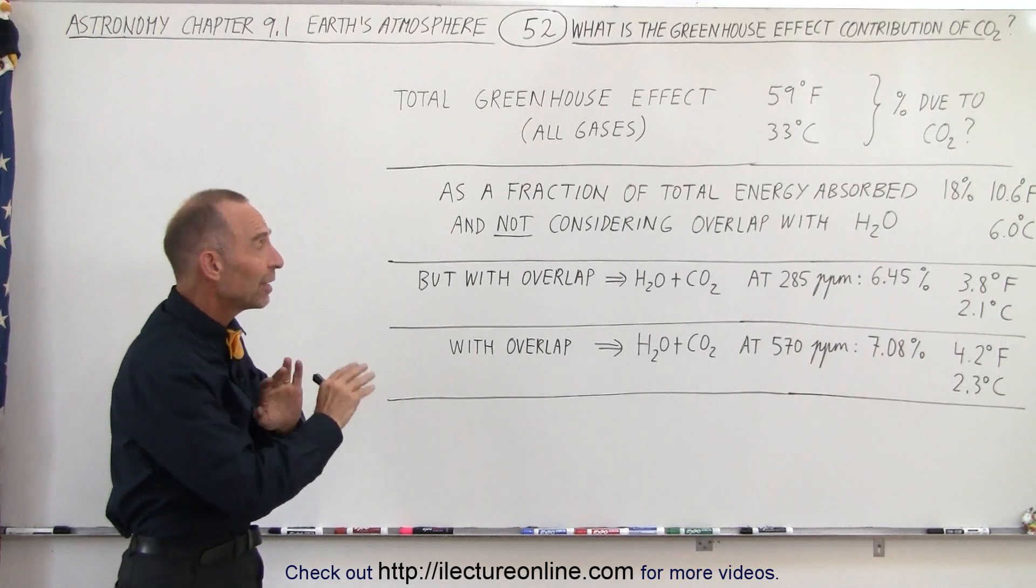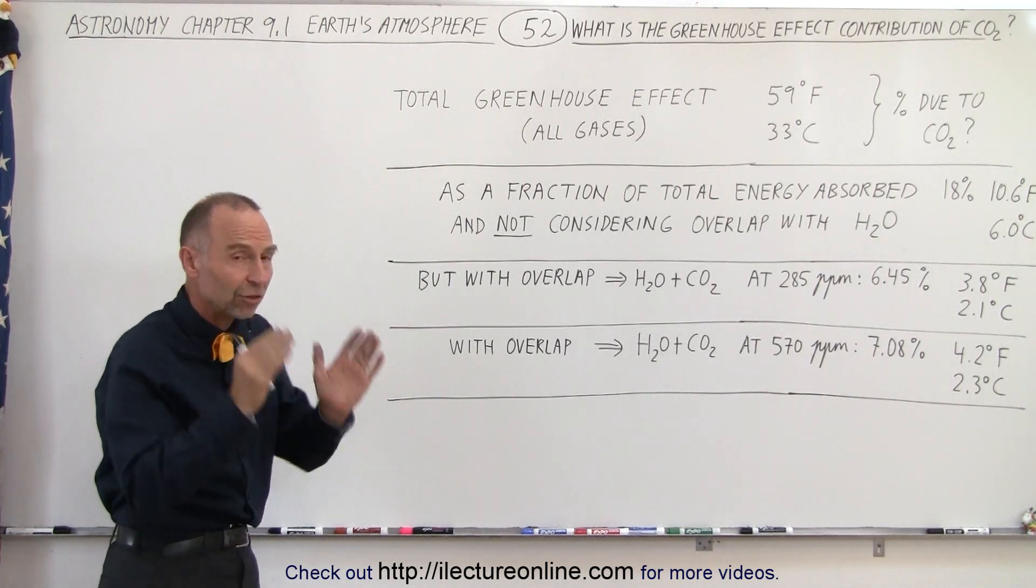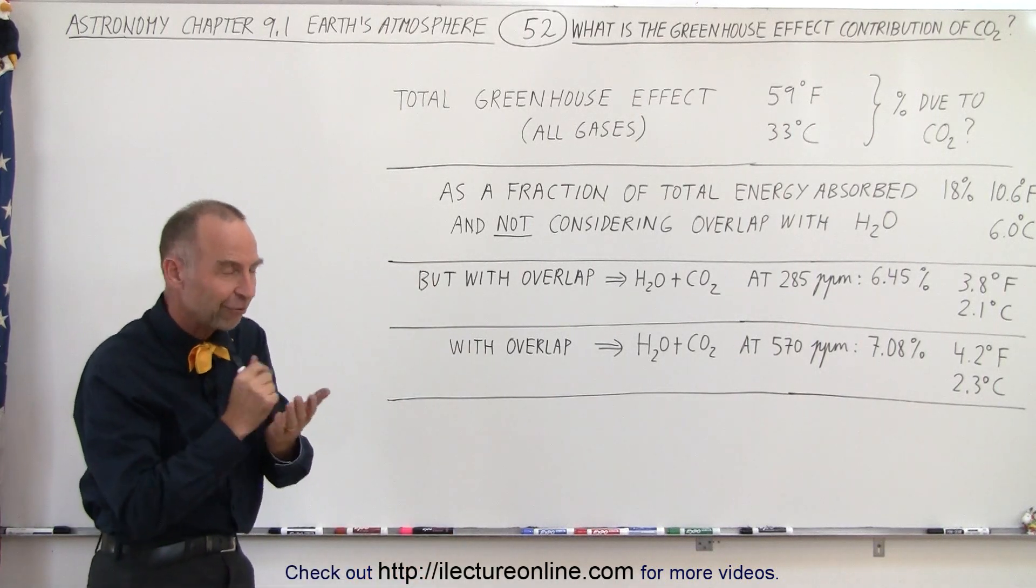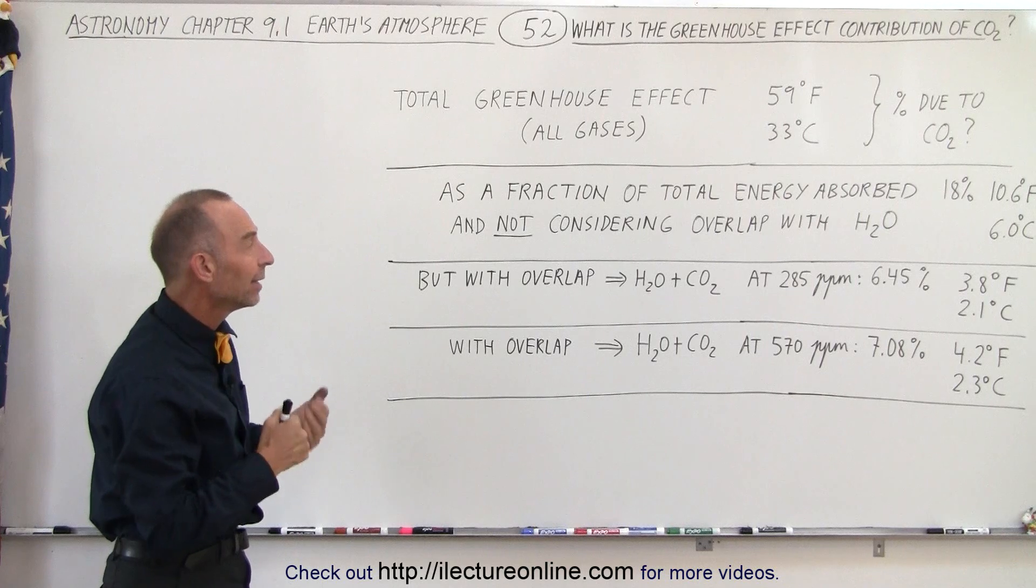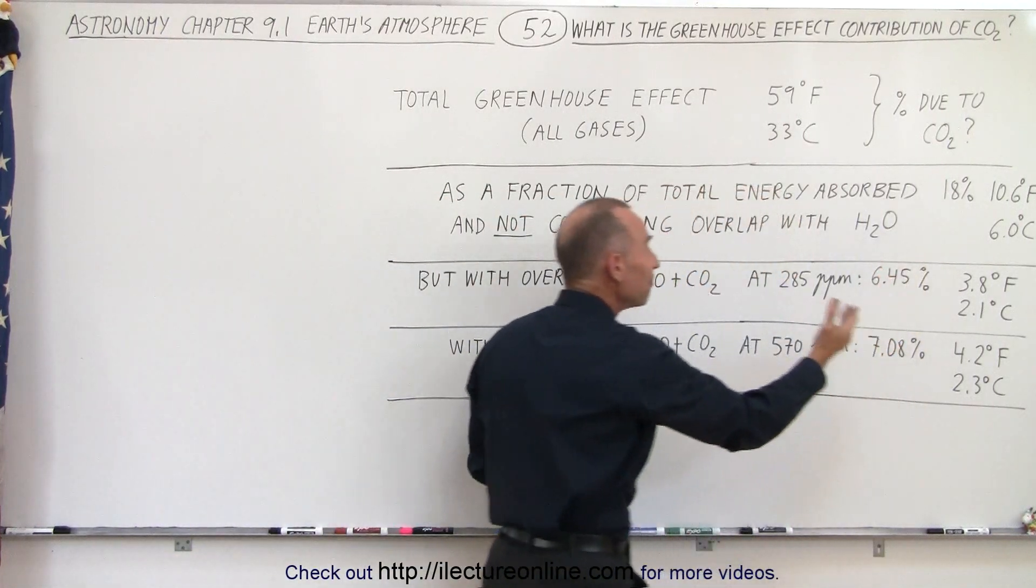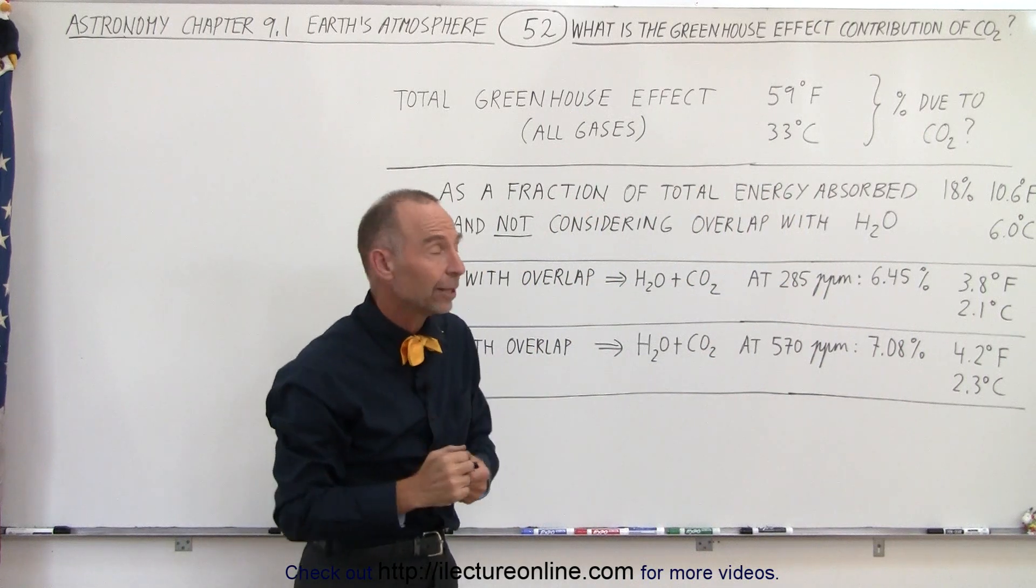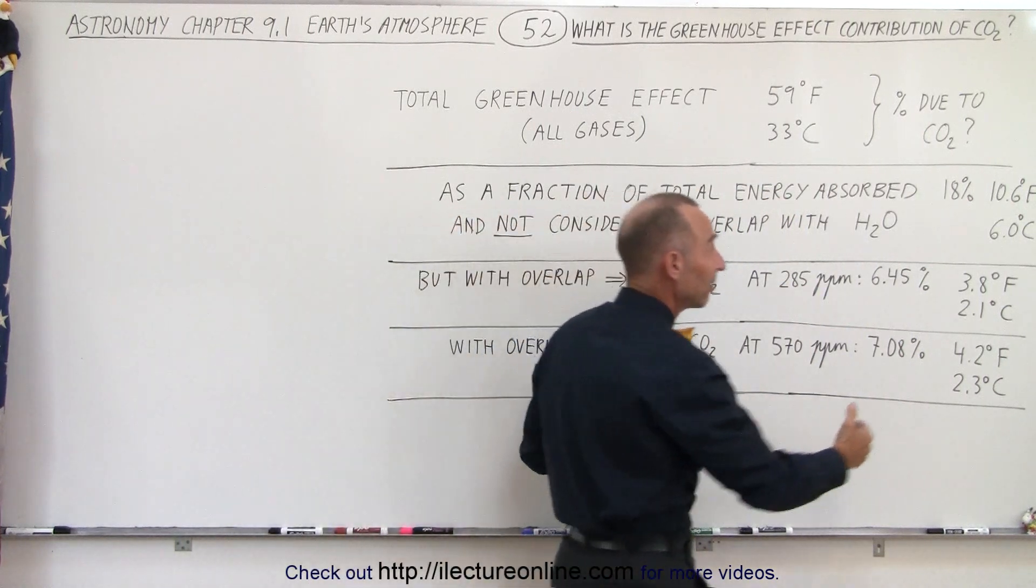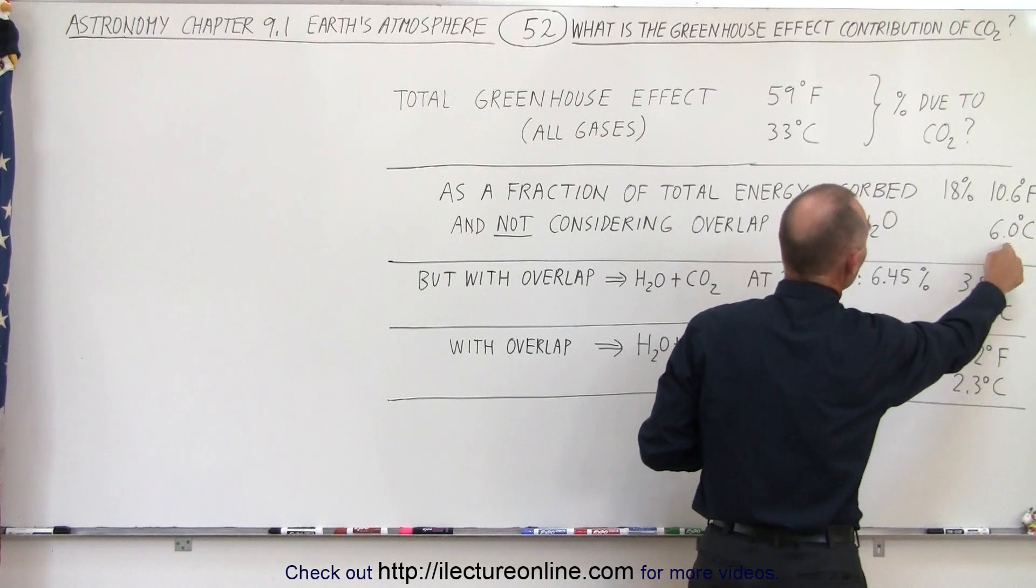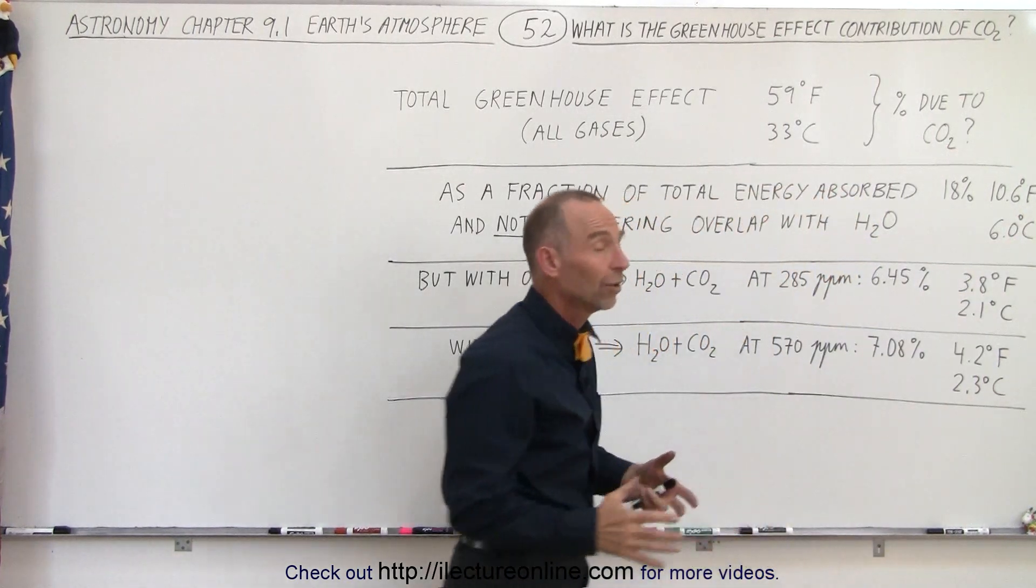If we ignore all the other greenhouse gases and just concentrate on that main band that carbon dioxide can absorb around the 15 micrometer wavelength, then we realize about 18 percent of all the radiation can be absorbed by carbon dioxide, which means that's an increase of about 10.6 degrees Fahrenheit or about 6 degrees centigrade.